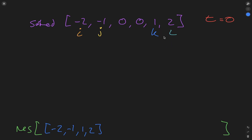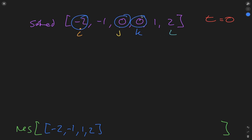In this case there are no duplicates to skip. k is incremented by one and l decremented by one, and k is no longer less than l. So we increment j by one, reset k to j plus one, and repeat the process. k is less than l, so we add up the pointers.